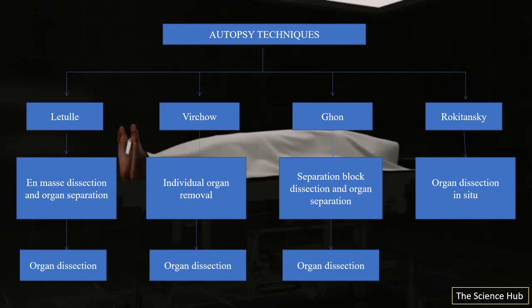An autopsy at its base is a surgical dissection. There are different correct ways to perform it, but the Letulle method has become the principal protocol for training pathologists. This method has the pathologist commencing the section at the abdomen; abdominal organs are removed in one block, which is called the en bloc method. The direction the Letulle method takes is called a retroperitoneal approach, meaning organs are removed starting from behind the peritoneum. The peritoneum is a serous lining in the abdominal cavity that covers and protects the abdominal organs.